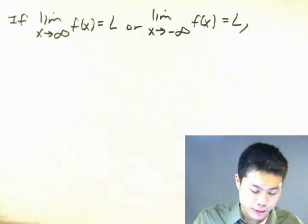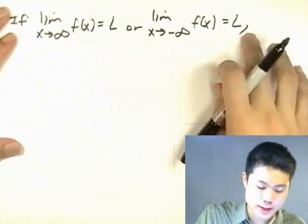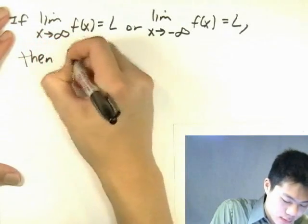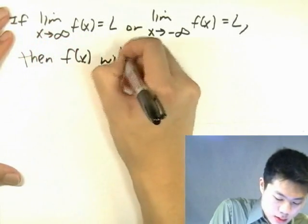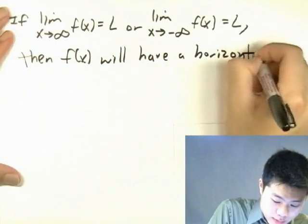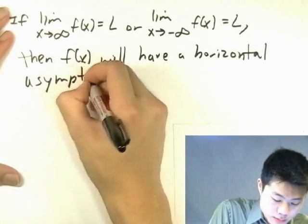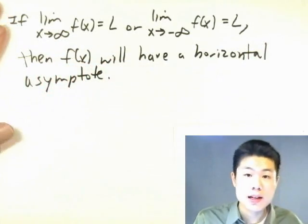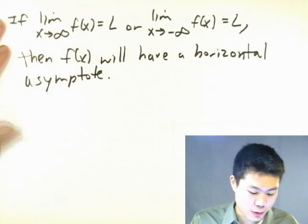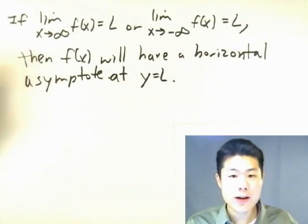So if the graph satisfies either of these requirements, then f(x) will have a horizontal asymptote, which we write as y equals L.